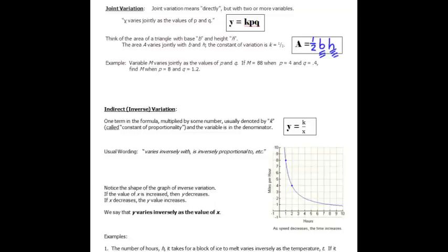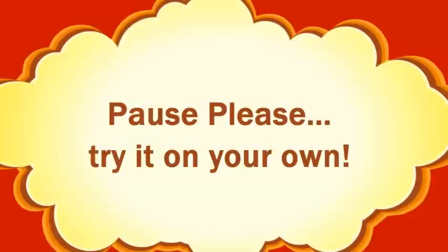Variable m is varying jointly as p and q, so that's saying m varies jointly as p and q. If m = 88 when p = 4 and q = 0.4, find m when p = 8 and q = 1.2. Again, you have to go in, solve for your constant of proportionality, and then plug it in to solve for m. So why don't you pause here and try that problem.